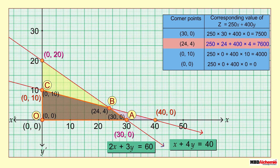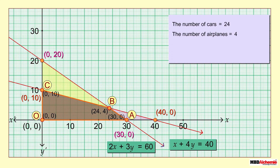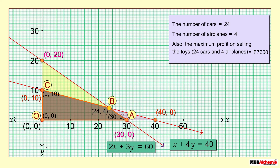The maximum value of Z is 7600 at the point (24, 4). Since the point (24, 4) gives the maximum solution of 7600, it is called the optimal solution. Therefore, the required number of cars is 24 and the number of airplanes is 4, and the maximum profit on selling the toys is 7600 rupees.